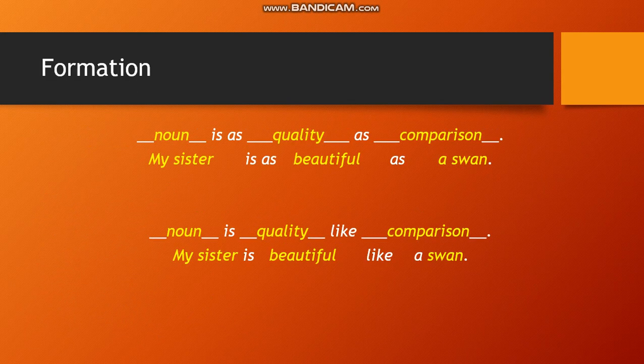The formation of a simile is: we put the noun that we are comparing, then we use 'is' and then 'as', then we put the quality of the noun, and then we put the comparison. For example, my sister is as beautiful as a swan. There is another way of making a simile by using 'like' — this is easier. So the other way is noun with 'is', then quality, then 'like', and then the comparison. For example, my sister is beautiful like a swan.